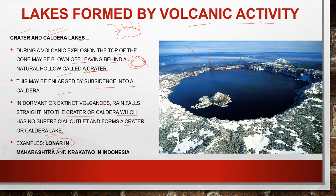Examples of crater/caldera lakes include Lonar Lake in Maharashtra and Krakatoa in Indonesia. Lonar Lake in Maharashtra is noteworthy because it was formed by a meteorite impact — the meteorite fell in the area and created a crater-like structure, and water collection in that structure formed the lake. So Lonar Lake in Maharashtra is basically formed due to a meteorite impact.